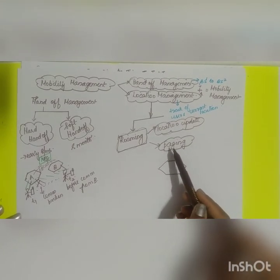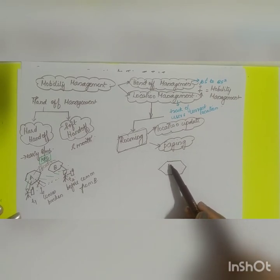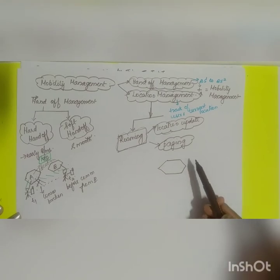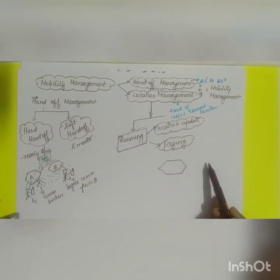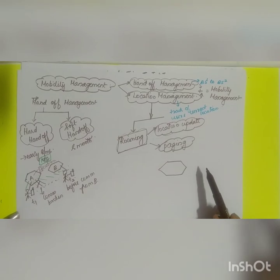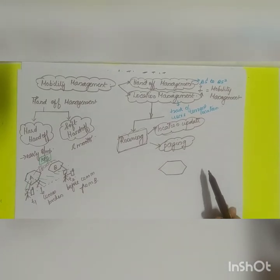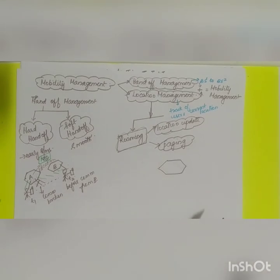Location management is concerned with roaming, location updating, and paging. When a mobile moves from one location area to another — for example, from one state to another — it performs a location updating procedure by making an association between the foreign agent and the home agent. These are the topics covered in the first section; the next video will cover the second section of module 5.